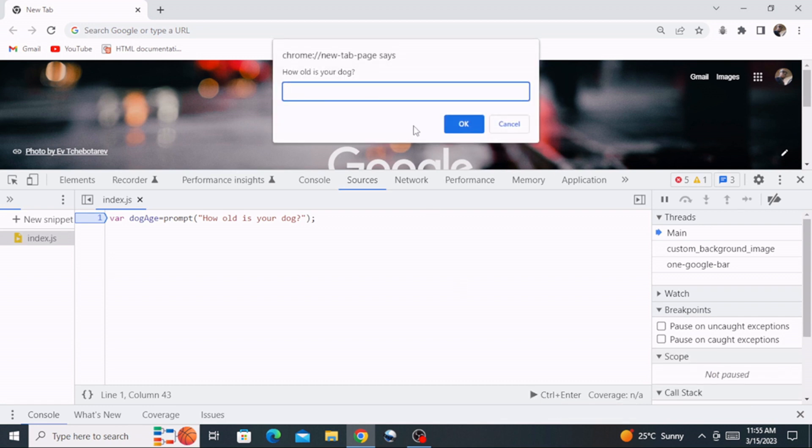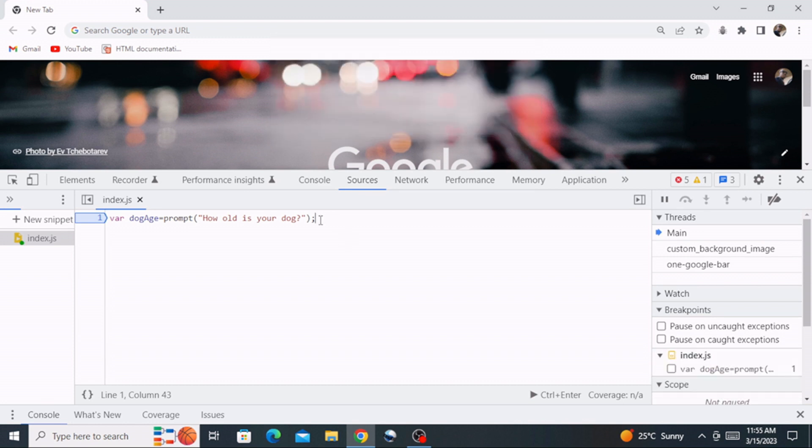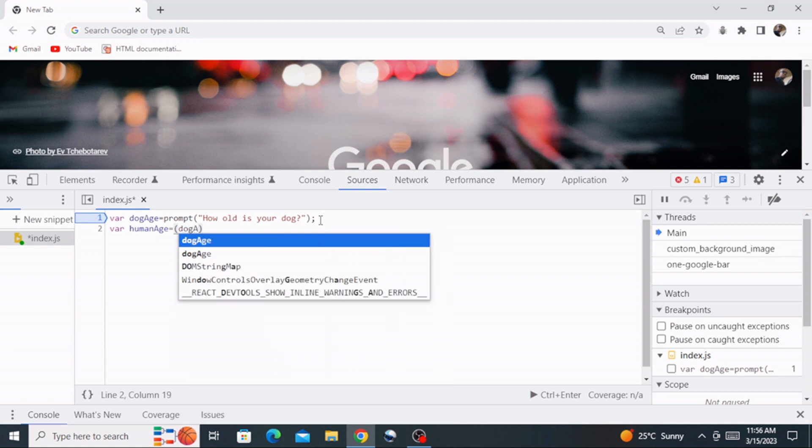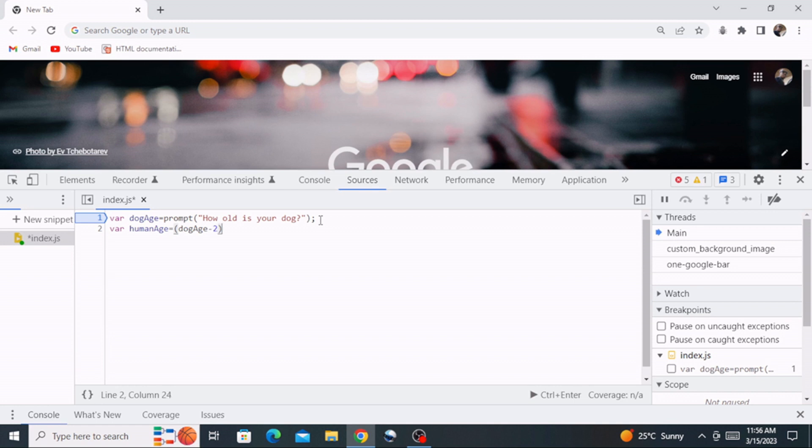Now the next thing we are going to do, we are going to create a variable, and then as per the formula we are going to say human age. The name of this variable is human age will be equals to dog age minus two, multiply by 4 plus 21, like so. Then let's close this off.